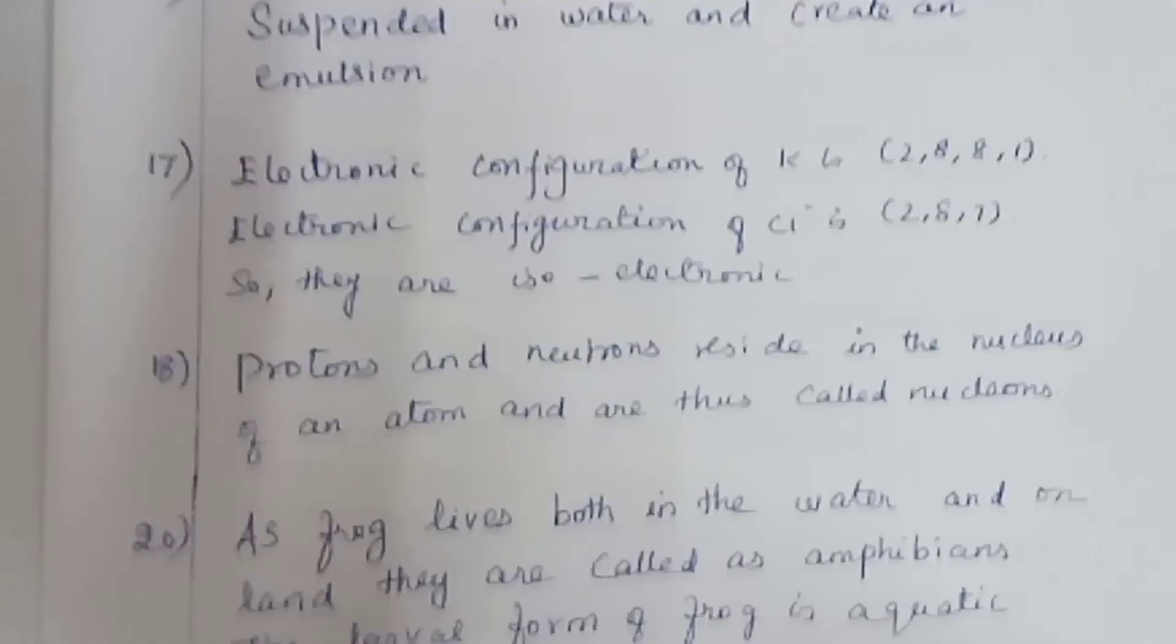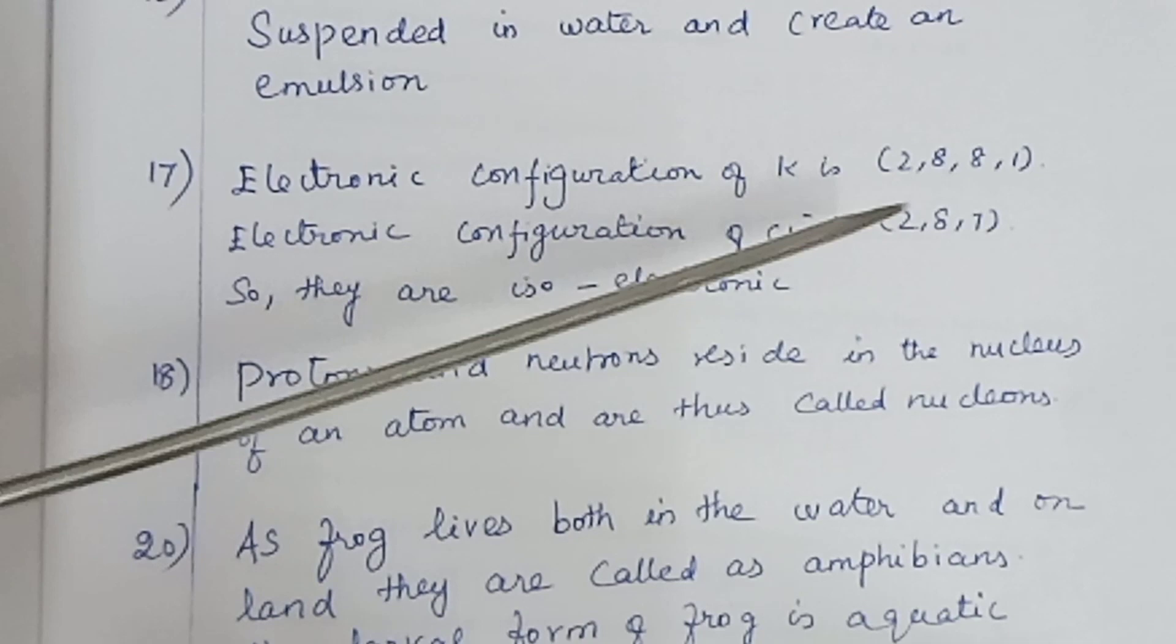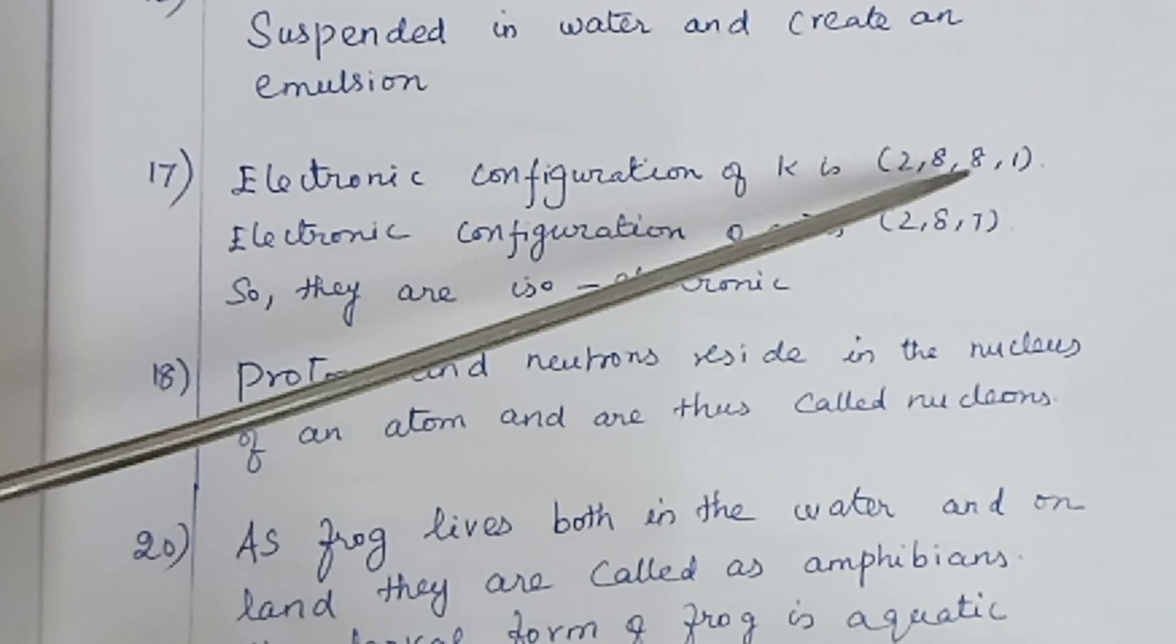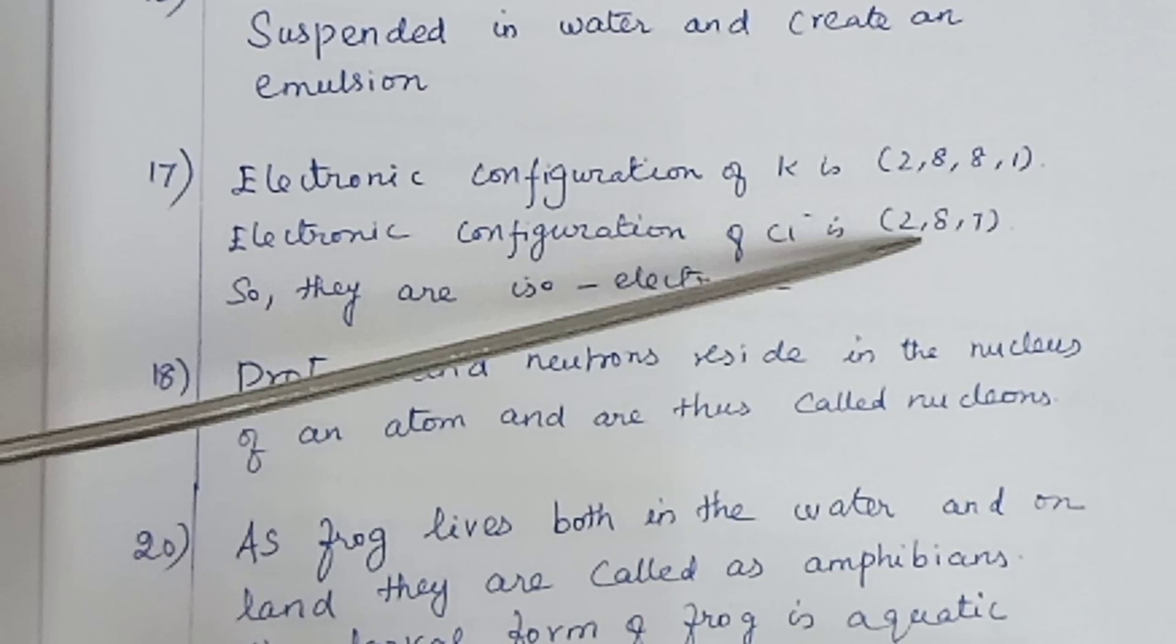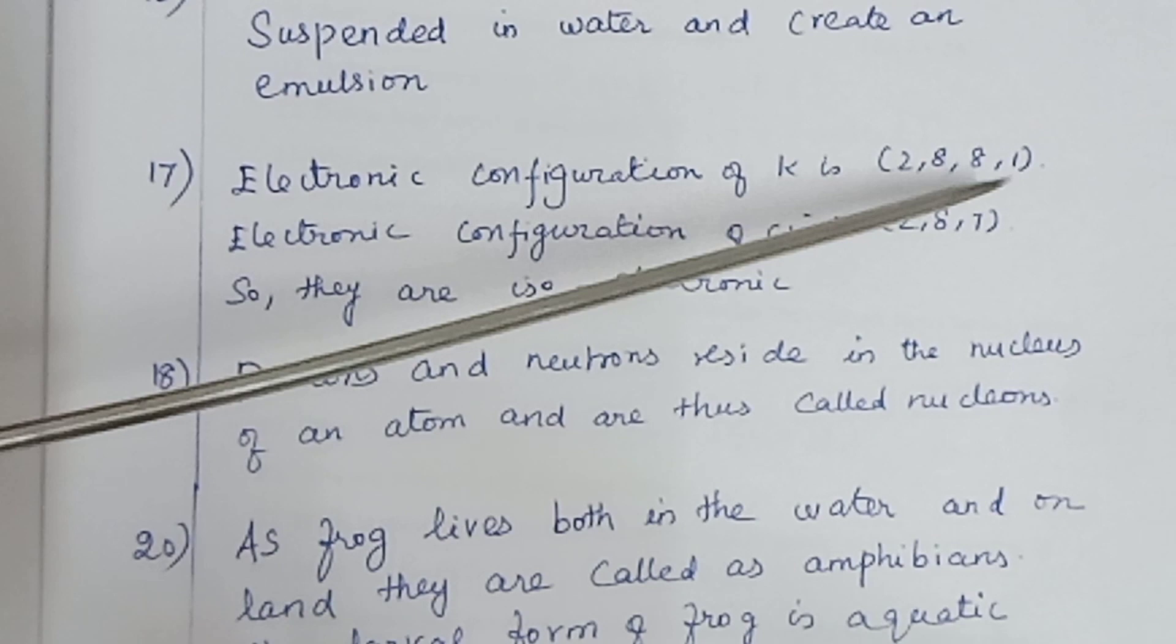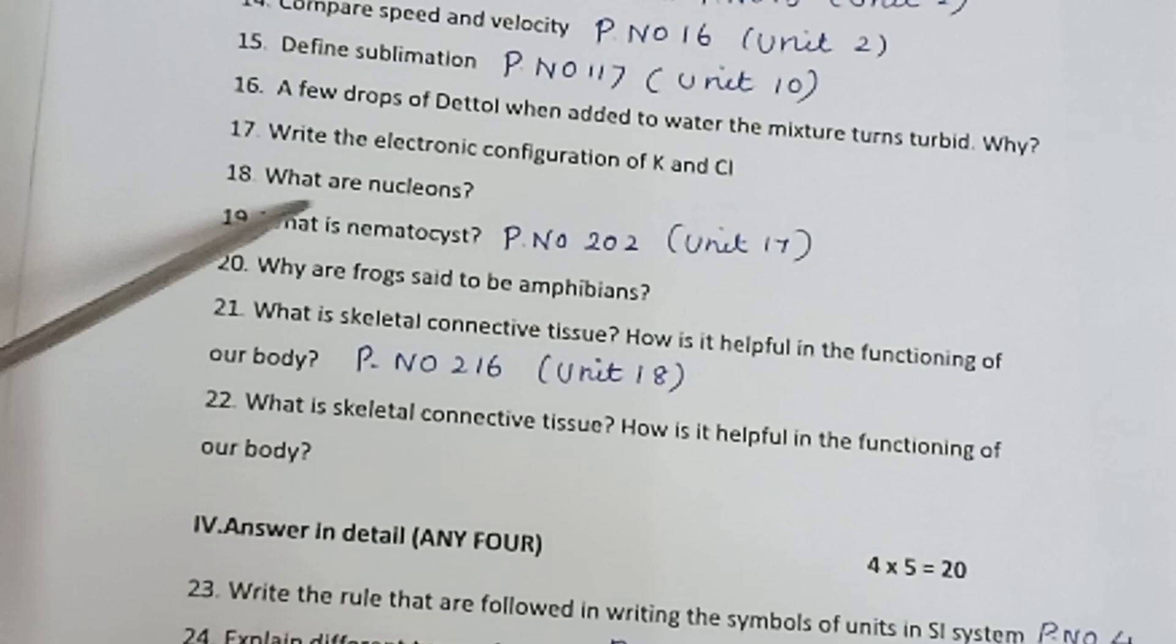Question 17: Write the electronic configuration of potassium K and chlorine Cl. Electronic configuration of potassium is 2,8,8,1. Potassium's atomic number is 19. Electronic configuration of chlorine is 2,8,7. Atomic number is 17. Outermost electronic configuration has 8 electrons, so they are isoelectronic.